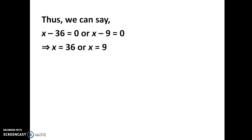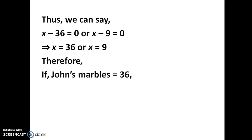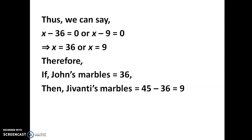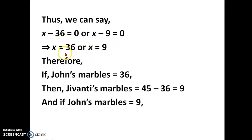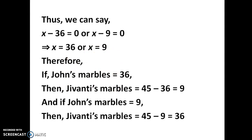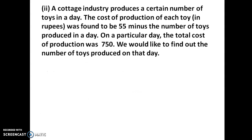Equating to 0, we get x equal to 36 or x equal to 9. If John's marbles is 36, then Jivanti's is 45 minus 36 equal to 9. If John's marbles is 9, then Jivanti's is 45 minus 9 equal to 36. Both values are positive so either can be the answer. Both conditions are valid.